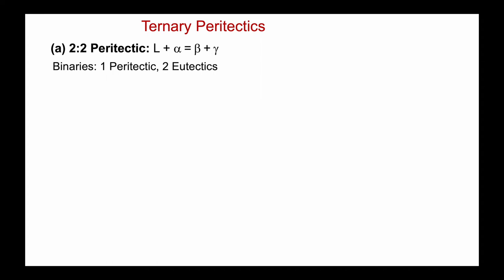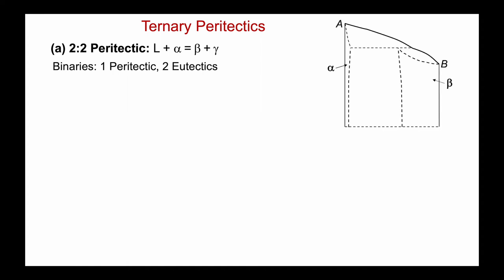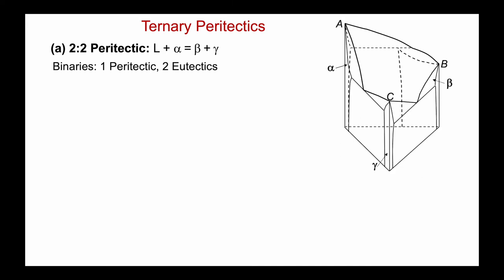Let's assemble the space diagram from those binaries. I've chosen AB to be my peritectic, where the liquid composition lies outside the two solid compositions alpha and beta. Let's add C: AC is a eutectic with a little bit of solubility of C giving a gamma solid solution, and BC also forms a eutectic. I've colored in the various liquidus surfaces in the space diagram — we can see three associated with alpha, beta, and gamma.